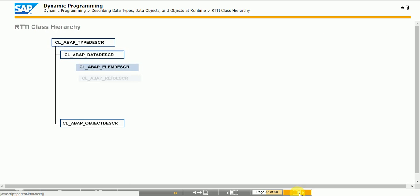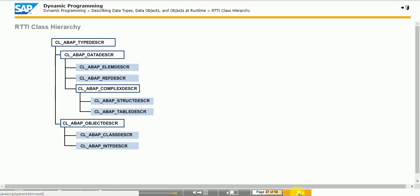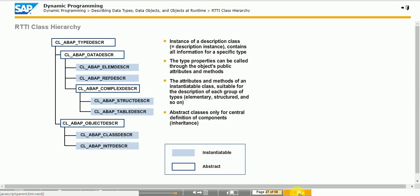As of SAP Web AS 6.10, ABAP developers use a class-based concept, RTTI, to determine type properties such as data types and object types at runtime. Before RTTI, ABAP contained only the DESCRIBE FIELD and DESCRIBE TABLE statements. However, these statements are limited to properties of data objects and do not determine as many properties as RTTI. RTTI consists of a hierarchy of 10 global classes that developers use. The description of a type at runtime is an instance of one of these global classes.